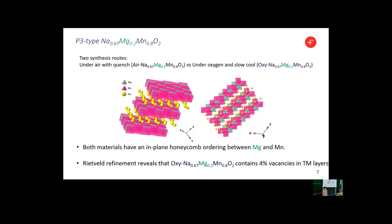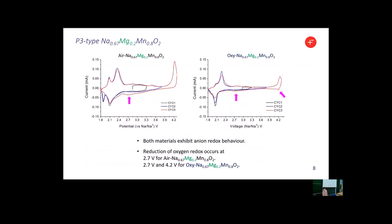First material investigated is 20% magnesium-doped sodium manganese oxide prepared using co-precipitation method bearing sintering conditions under air with quench or under oxygen and slow cool. Both materials have an in-plane honeycomb ordering between magnesium and manganese. The material prepared under more oxidizing conditions shows 4% transition metal vacancies confirmed by Rietveld refinement. The presence of transition metal vacancies in P3-type phase triggers a novel oxygen oxidation at 4.2 volts on top of the one at 2.7 volts, which stems from substituted magnesium.